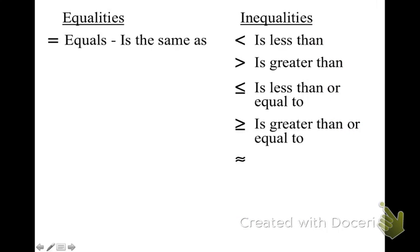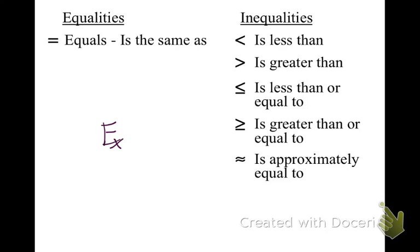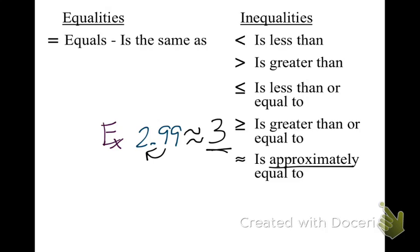Our second to last symbol is two little squiggly lines, which means is approximately equal to. For example, 2.99 is approximately equal to 3. It's kind of like a guess — we're rounding up. 2.99 is basically equal to 3. I want this in your notes.